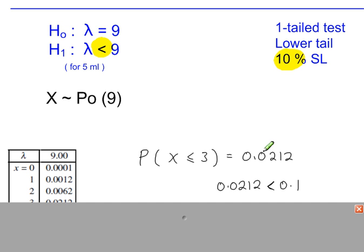And this probability is less than the 10%, so less than 0.1, which means the result is significant. And we reject H0.